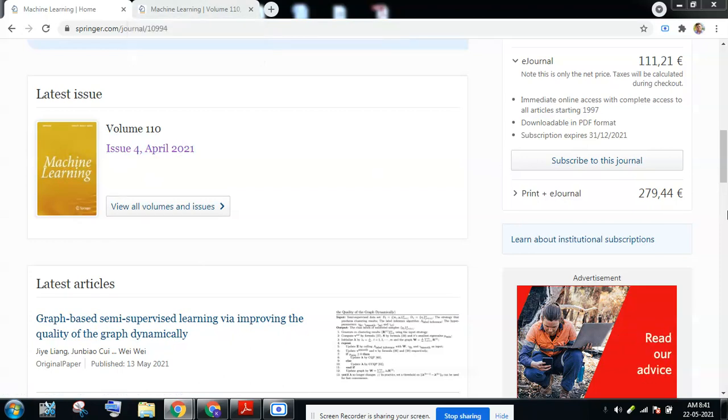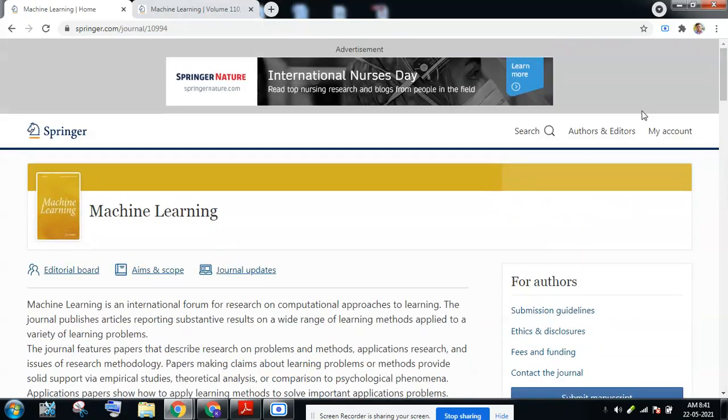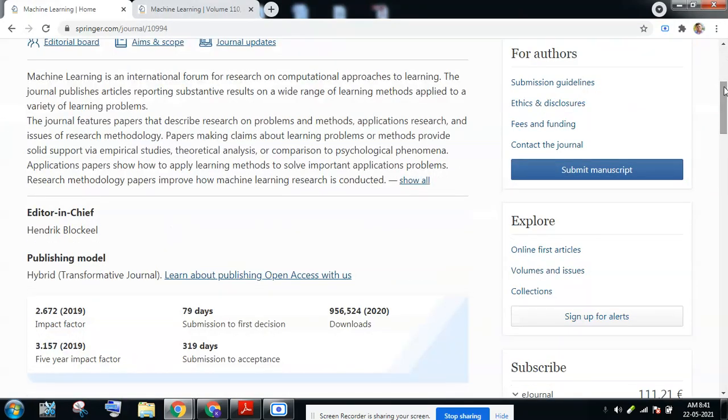Here you can see that this journal has its own credentials like it has an impact factor of 2.672 in 2019 and 5 years impact factor is 3.157. It takes a minimum 79 days for the initial first decision and 319 days for the submission to acceptance. It has good number of downloads 956,524 in 2020.